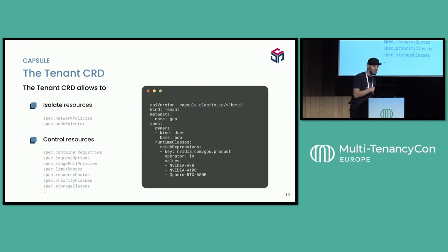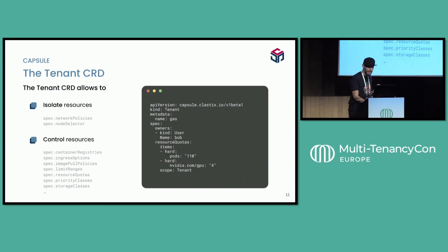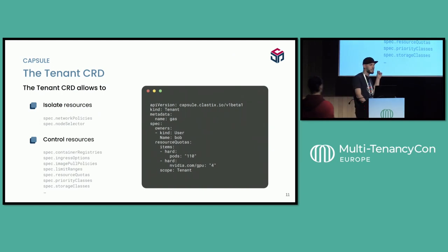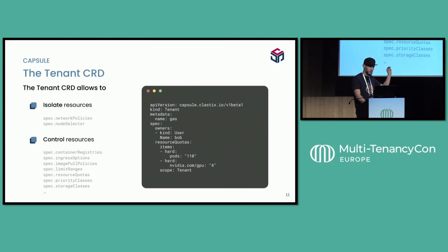With Capsule, you provide tenant owners the ability to create namespaces in a self-service way while enforcing policies. For GPU multi-tenancy, you enforce runtime classes — we support allow-match and reject-match — and it's a matter of selecting GPUs according to the product. You can also specify how many GPU instances to consume: one, two, three. This is orchestrated by the NVIDIA operator, applying resource quota keys that Capsule creates on your behalf.